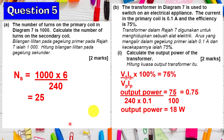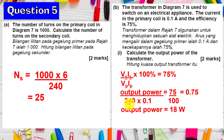The numerator is V-secondary times I-secondary, which we call power output. The denominator is V-primary times I-primary, which we call power input. Multiply by 100% to get 75%. The input power is 240 multiplied by 0.1. So we get 75 over 100, which is 0.75. Moving the 100% to the other side means it becomes a divisor. Finally, the output power is 18 watts. You can check — the output power should always be less than the input power.